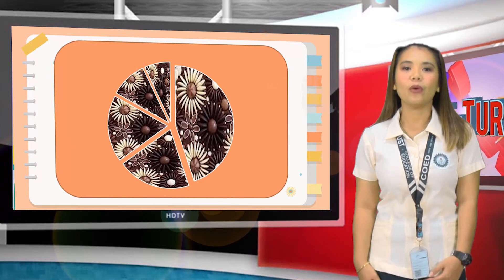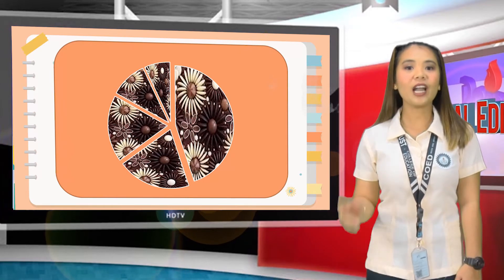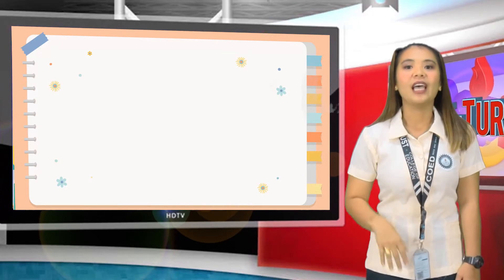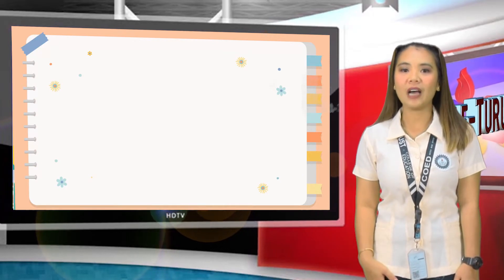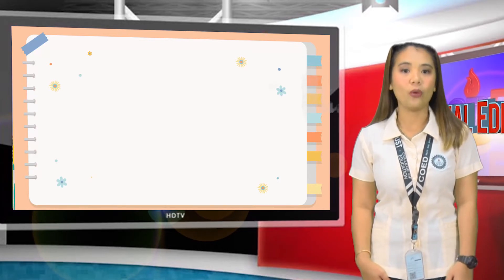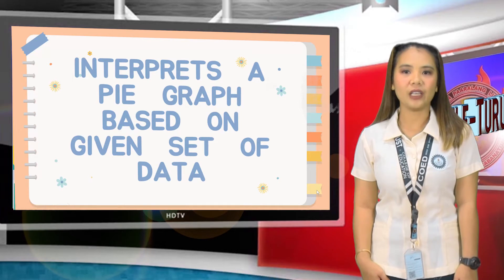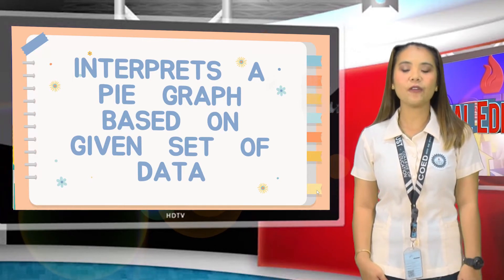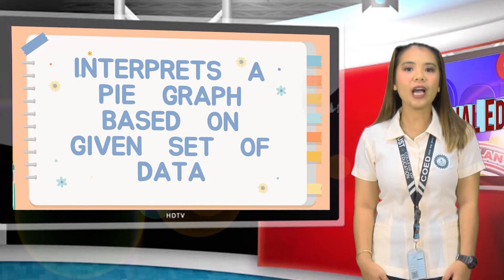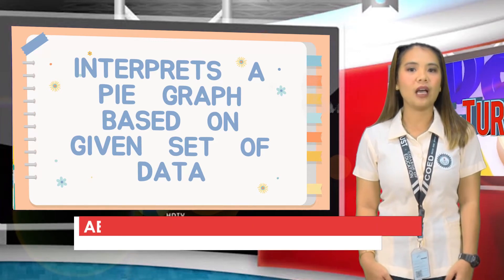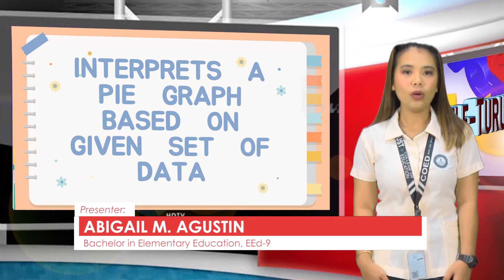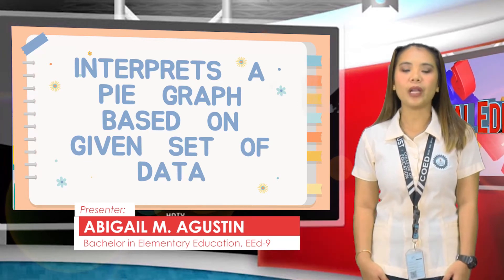I gave you a cake with different slices because it has something to do with our discussion today. I want all your eyes and ears with me. Listen to our discussion because we have some activities that you have to answer after. For today, I will show you how to interpret a pie graph using a given data. We are going to discuss why others got the smaller one and a bigger slice. Our topic will be on how to interpret a pie graph.